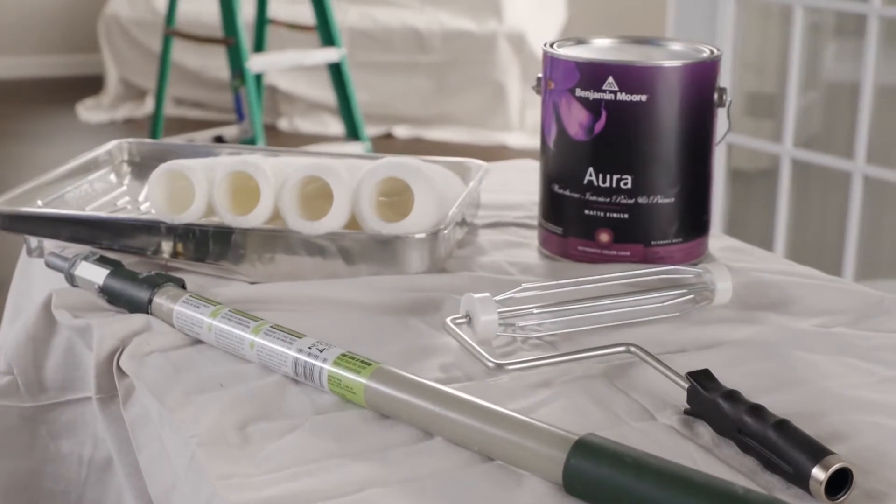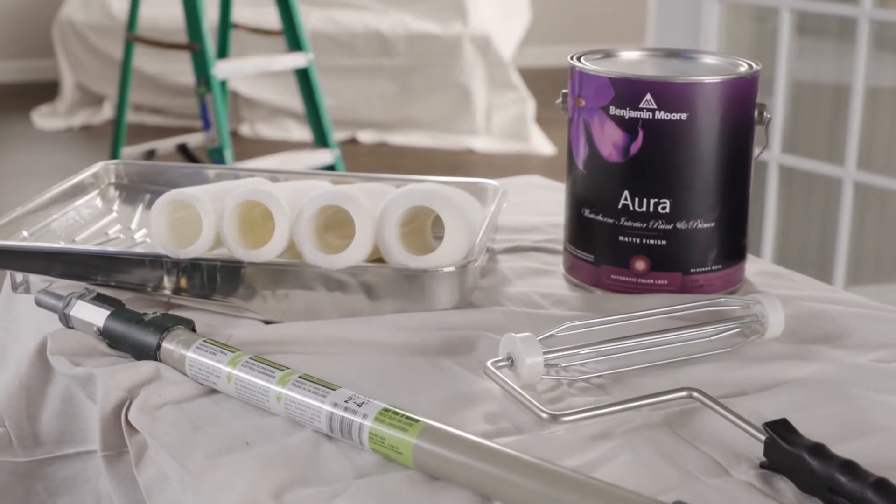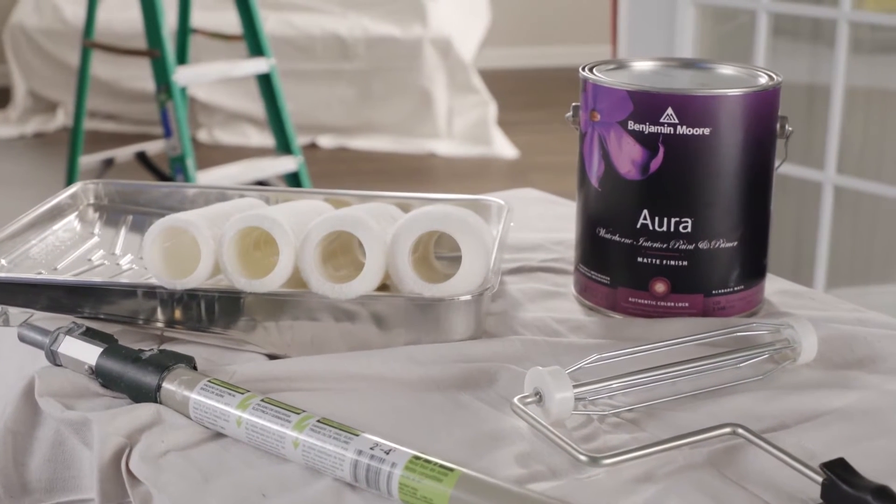Here's what you'll need. A 9-inch roller and handle, an extension pole, a pan, a stepladder, and Benjamin Moore Aura.